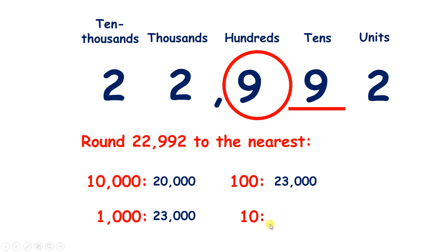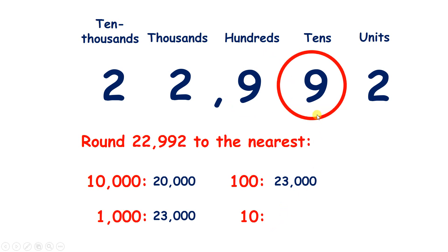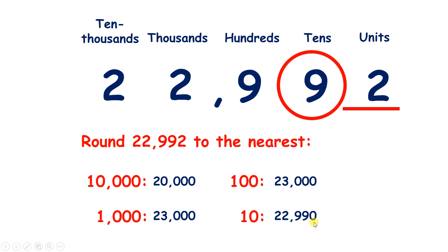Now rounding to the nearest 10, find the place, look next door — it's 4 or less, so that 9 will stay the same, and that rounds to 22,990.